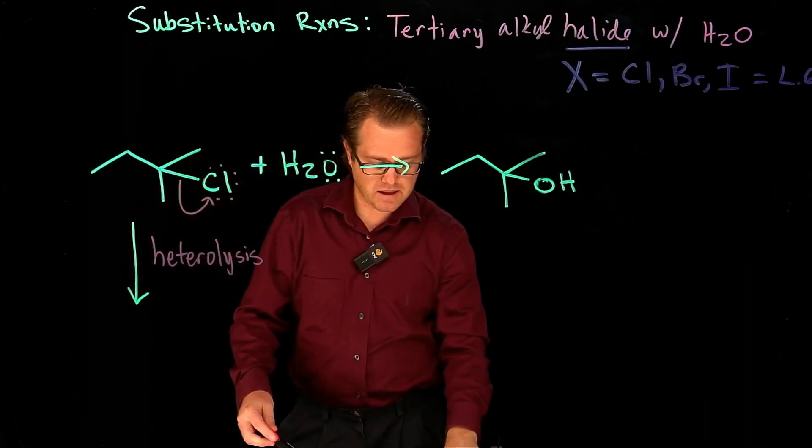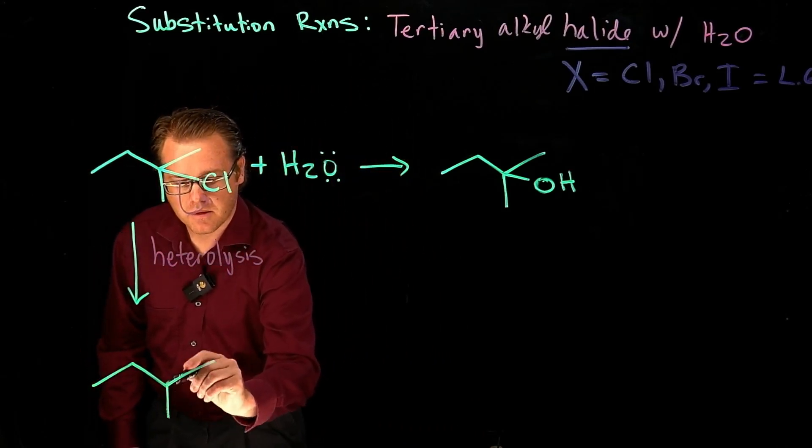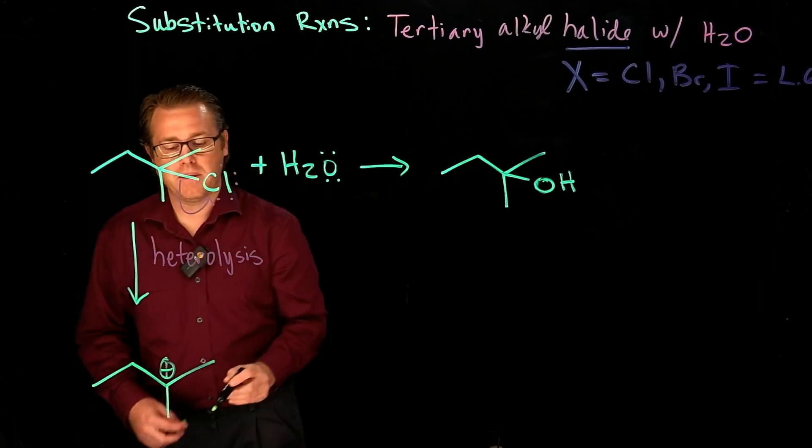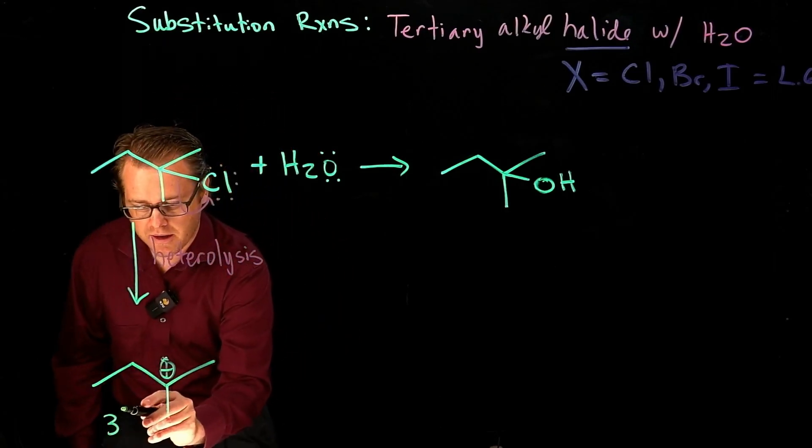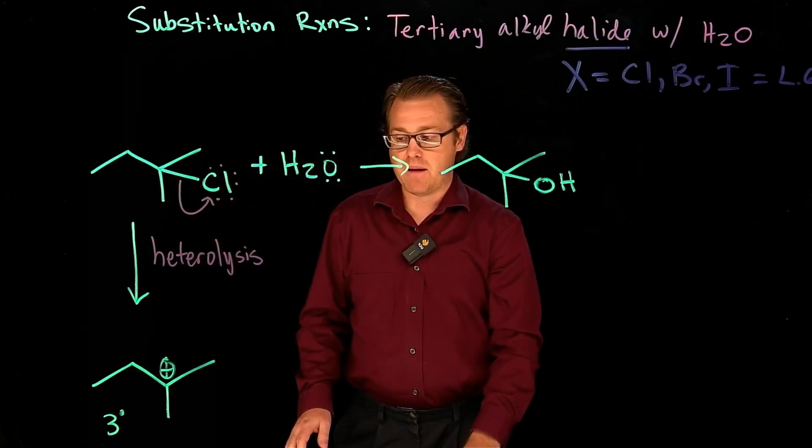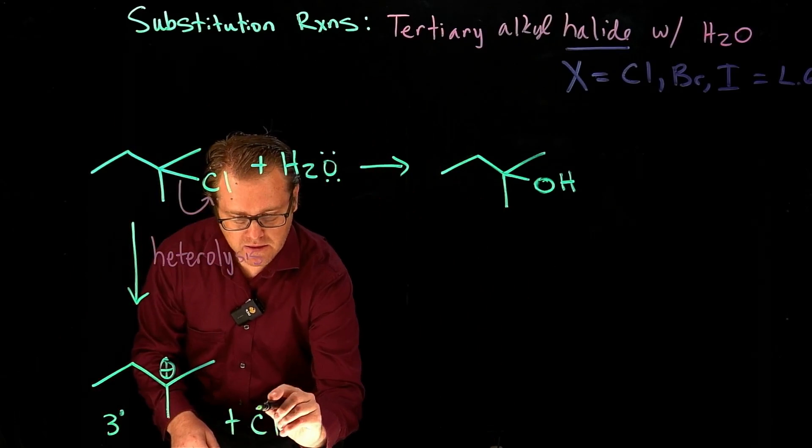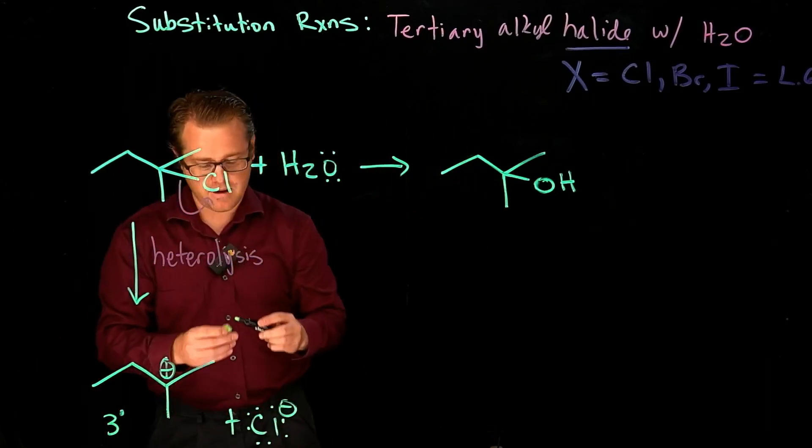And when that leaves, we generate a carbocation. And this is really important because this is a tertiary carbocation, which is relatively stable. And then we have the leaving group that has just left as well, right there.